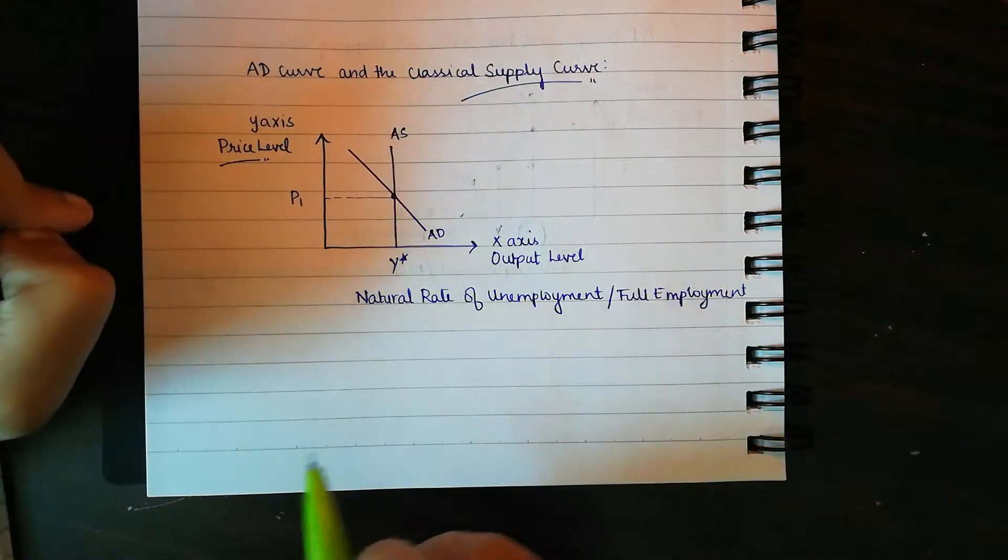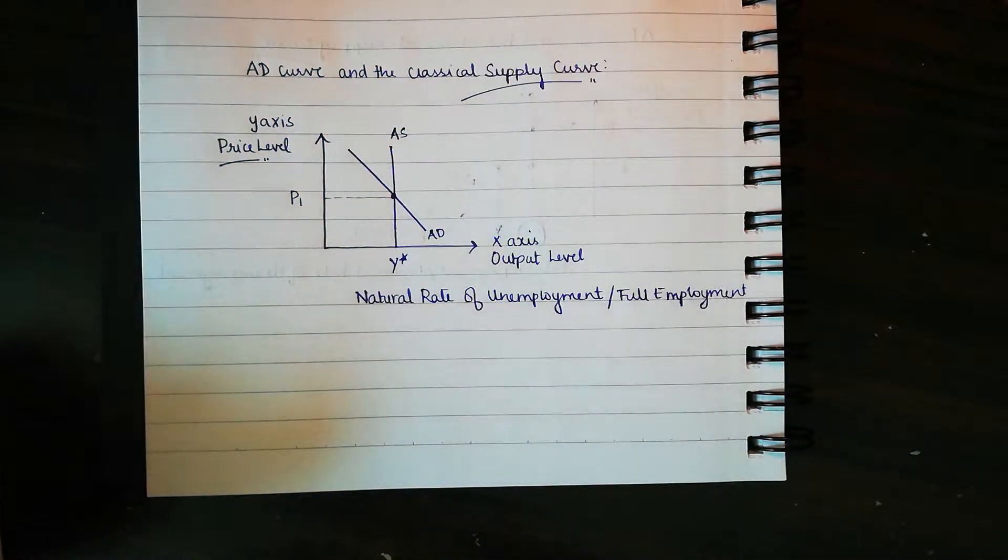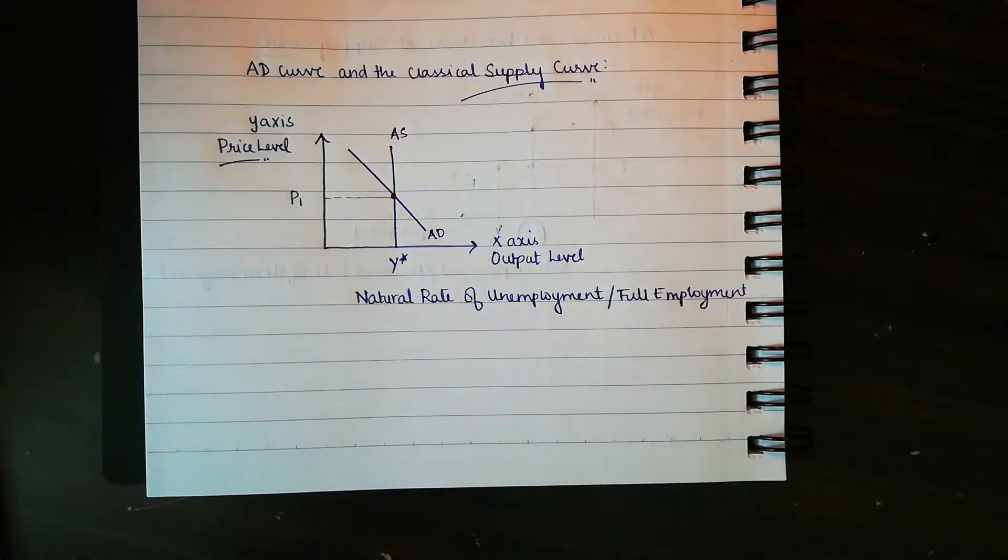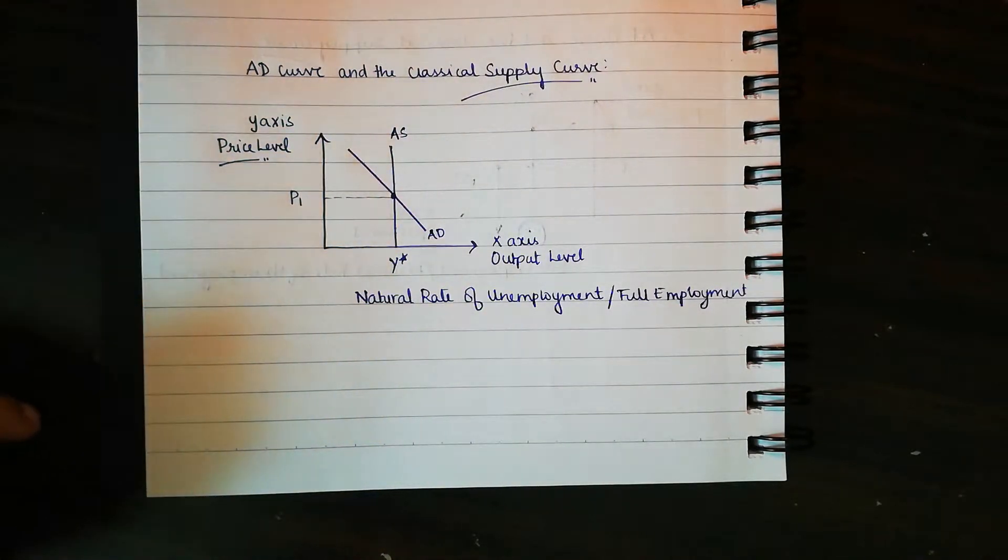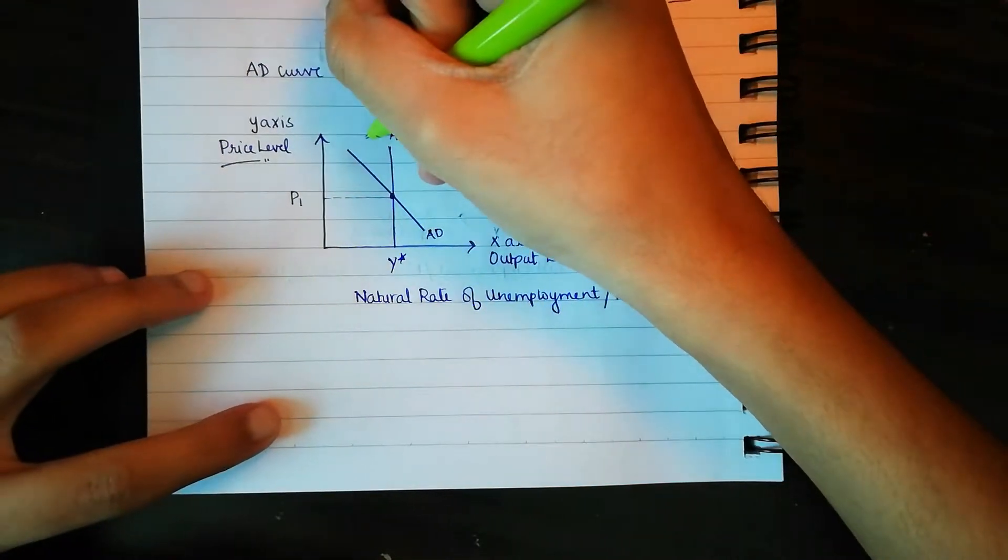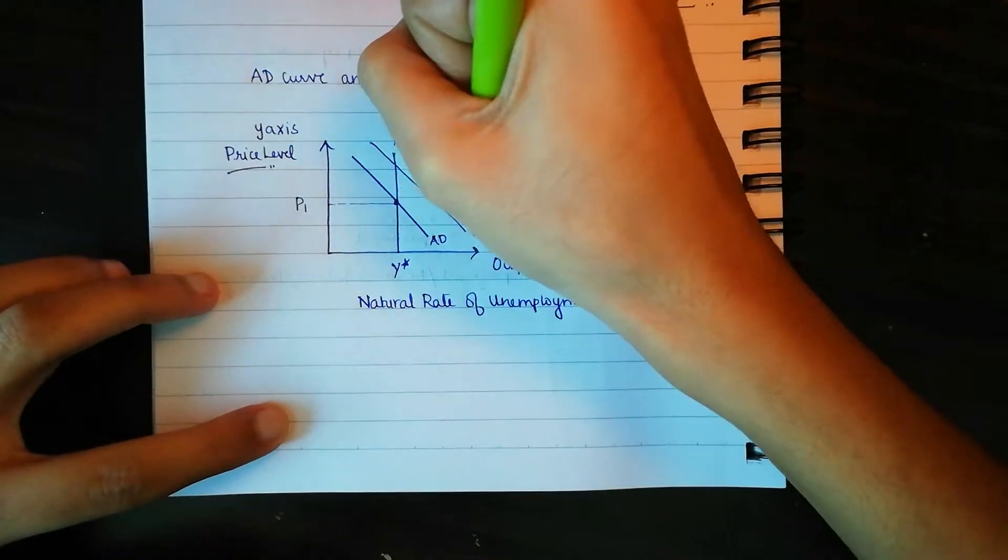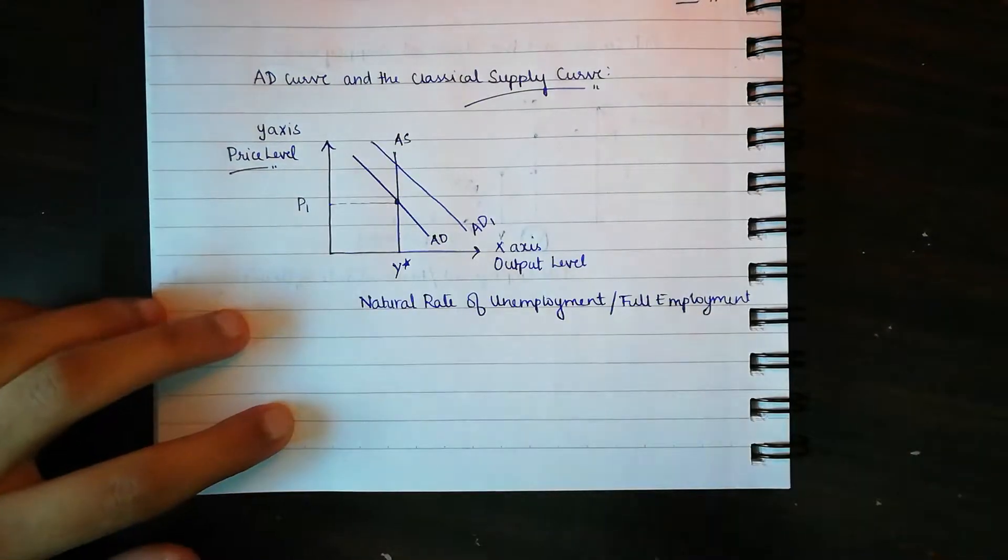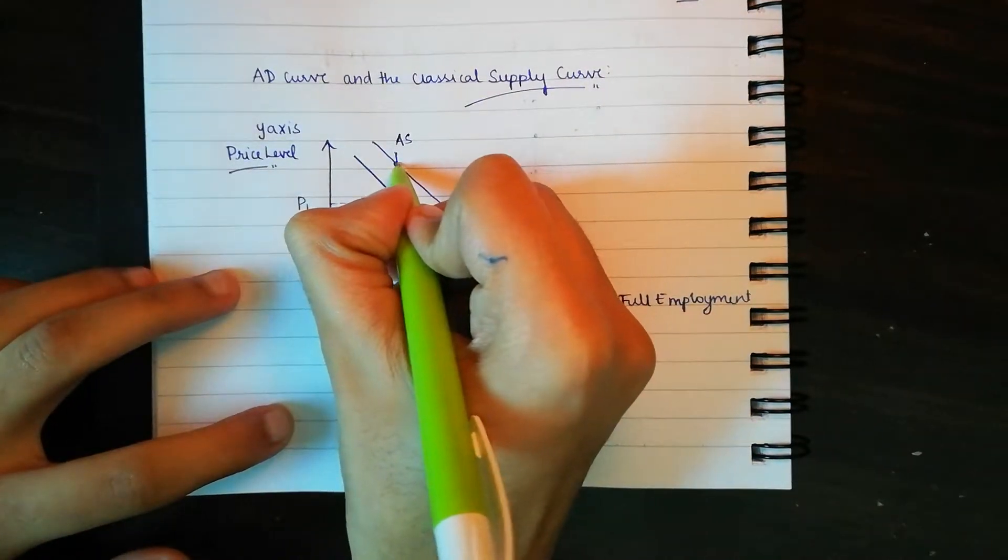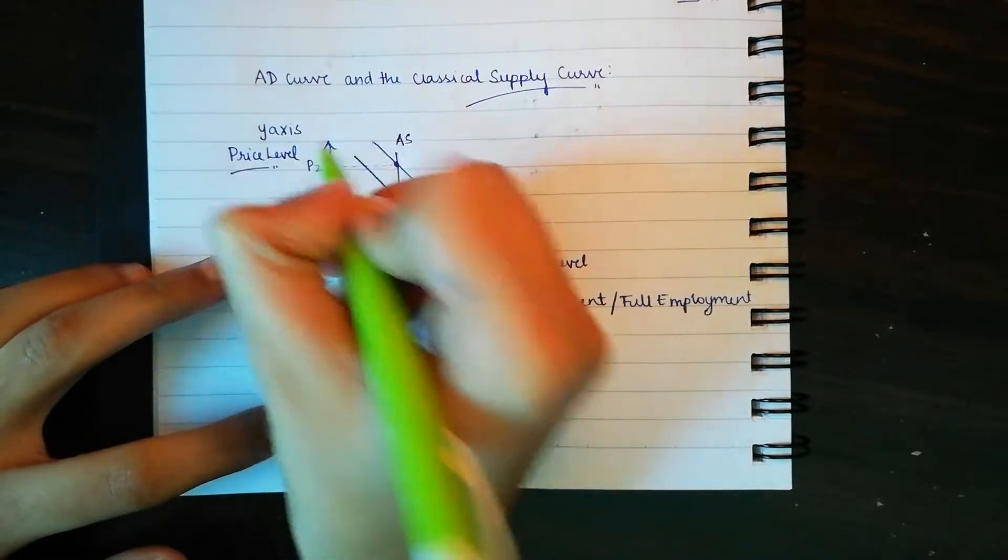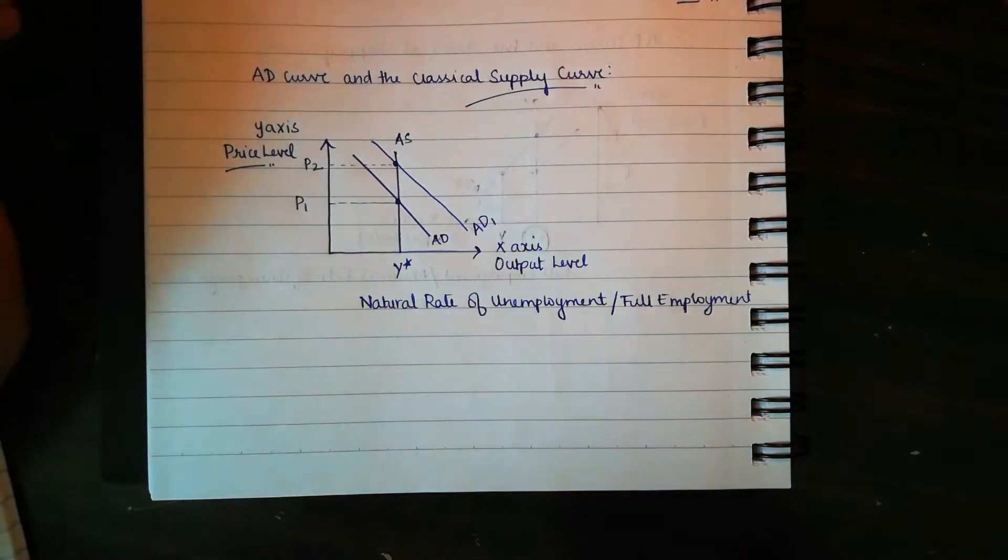Now consider an event taking place. Maybe there is a sudden increase in monetary supply, or maybe the government decided that there will be tax cuts implemented. Both these situations have only one outcome, and that is a rightward shift of aggregate demand. That would be AD1, and that would become the new demand curve.